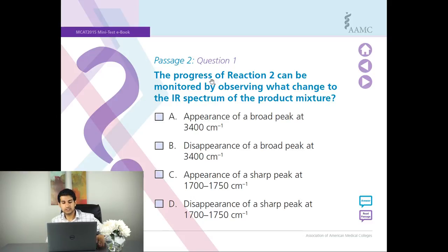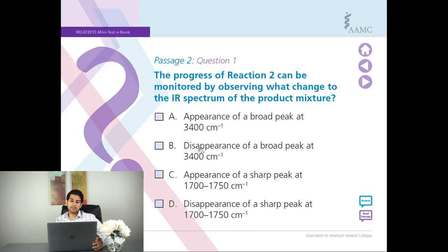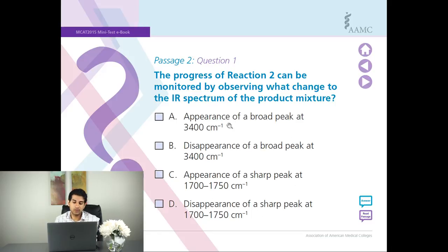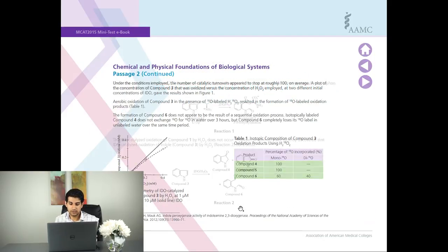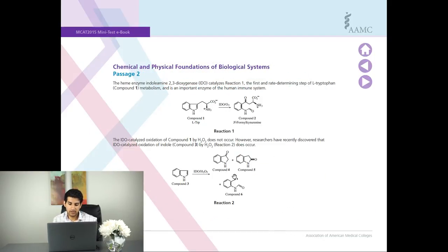Getting into the first question: the progress of reaction two can be monitored by observing what change in the IR spectrum. This is something you're going to have to already know numbers for, so if you don't, make sure when you review your exam you go over all the IR spectrum numbers you should have already known. So let's look at reaction two. We can see from here to here we have oxygens appearing — specifically carbonyl groups.